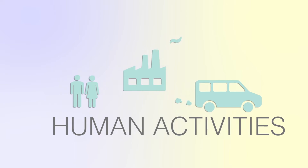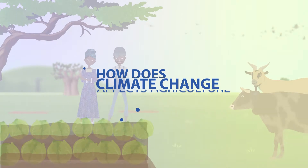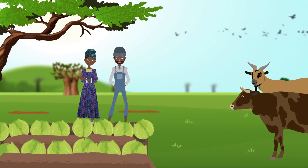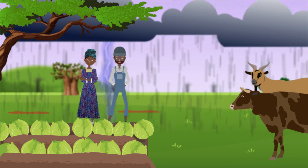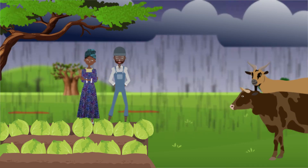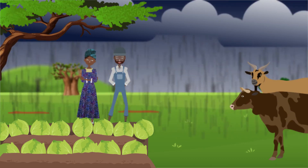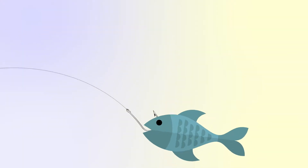How does climate change affect agriculture? Farmers depend on predictable weather in order to produce their crops and keep their livestock. Climate change is therefore affecting agriculture by causing extreme weather conditions that affect how we grow our crops, raise livestock, and even catch fish.